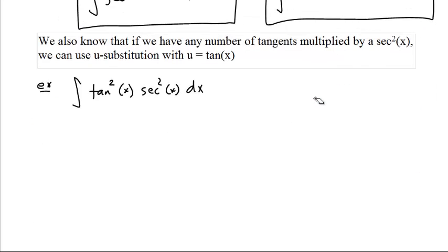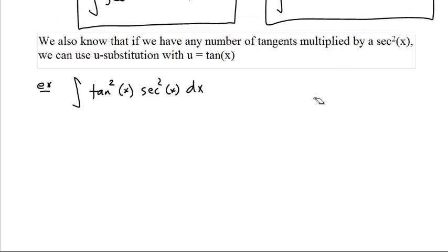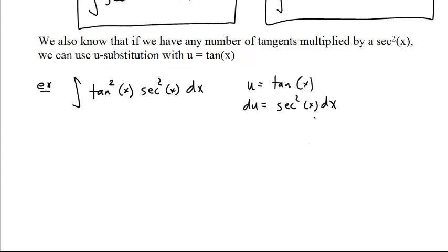For example, let's say we want to integrate tangent squared times secant squared of x. That's some number of tangents - it doesn't matter what the exponent is - times secant squared. If we set u equal to tangent of x, du is secant squared x dx. This becomes u squared.